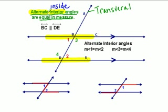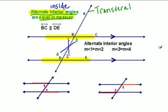Alternate interior angles have equal measure. Alternate means that the angles are across from each other. You can see that angles 1 and 2 are in red and angles 3 and 4 are in green — those are the angles that have the same measure.